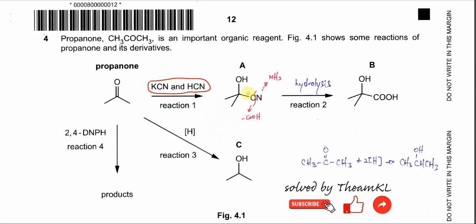This forms cyanohydrin as compound A. Compound A then forms compound B — the key difference is that the nitrile group is converted into a carboxylic acid. The nitrile undergoes hydrolysis, where the C–N bond breaks. The carbon forms COOH and the nitrogen forms ammonia, requiring water. Eventually compound B is formed with two functional groups.